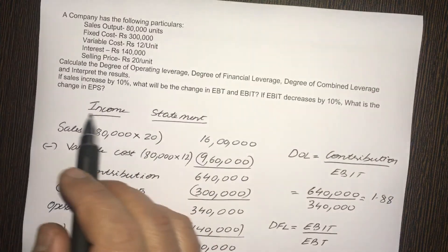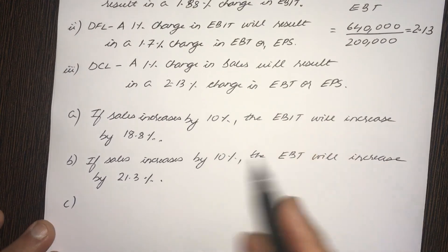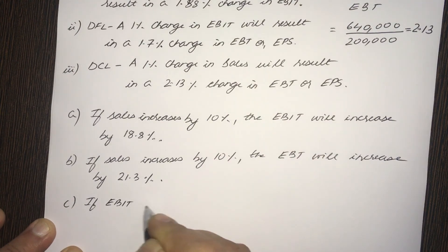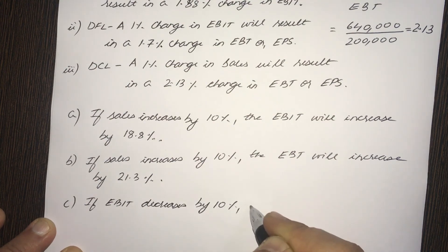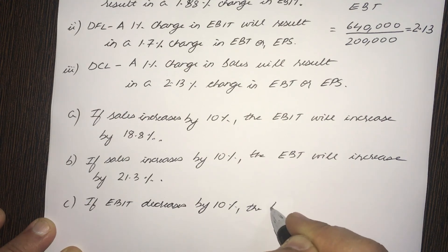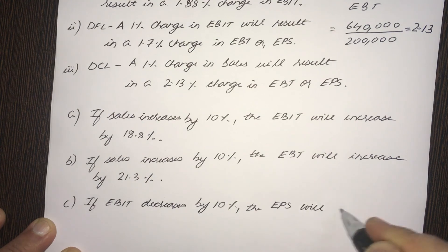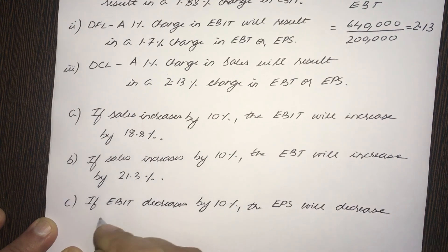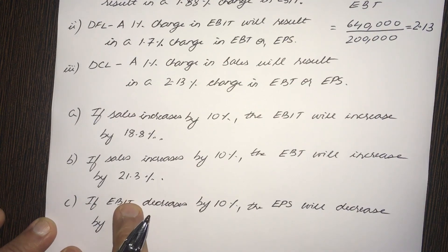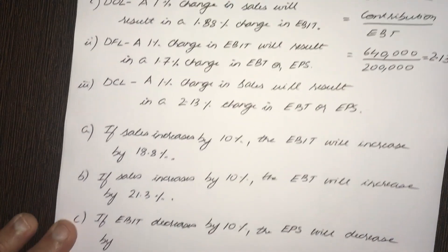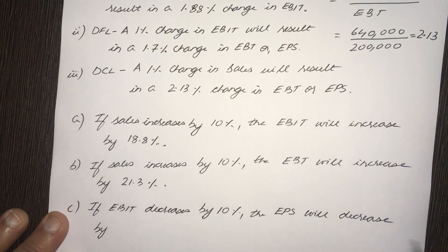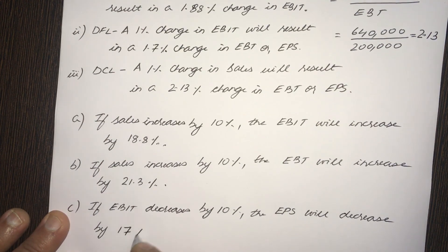And C: if EBIT decreases by 10%, what is the change in EPS? Since EBIT is connected to EPS, DFL comes in — DFL is 1.7 — so if EBIT decreases by 10%, the EPS will also decrease by 17%. That is how you solve this problem — a very simple problem.